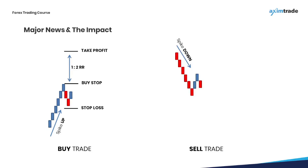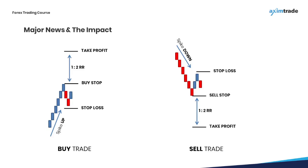Similarly, when the price spikes to the downside after the news release, traders usually wait for a short pullback before placing a sell stop order at the recent low. The stop loss is set at the recent high and the take profit is set at a 1 to 2 risk-to-reward ratio.